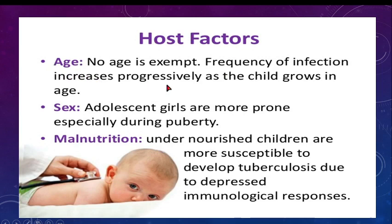Regarding host factors: no age is exempt — tuberculosis can occur at any age, from newborn to the geriatric population. Frequency of infection increases progressively as the child grows. Girls are more prone, especially during puberty. Malnutrition is the most common predisposing factor. If a child is immunocompromised for any reason — particularly if malnourished — they are more susceptible. Undernourished children have depressed immunological responses, making them more vulnerable to Mycobacterium tuberculosis.